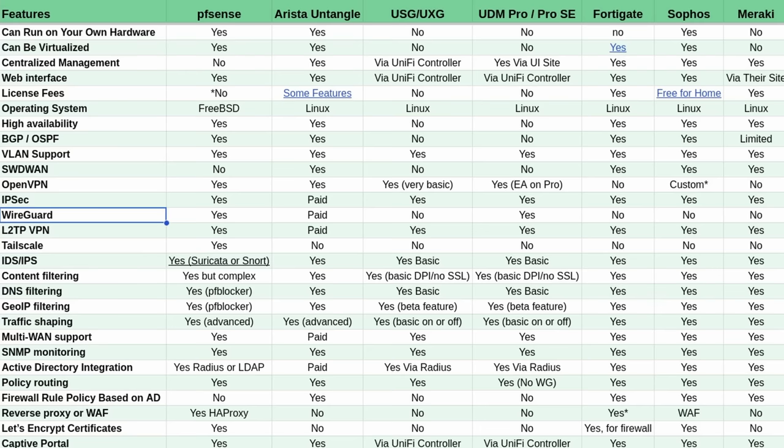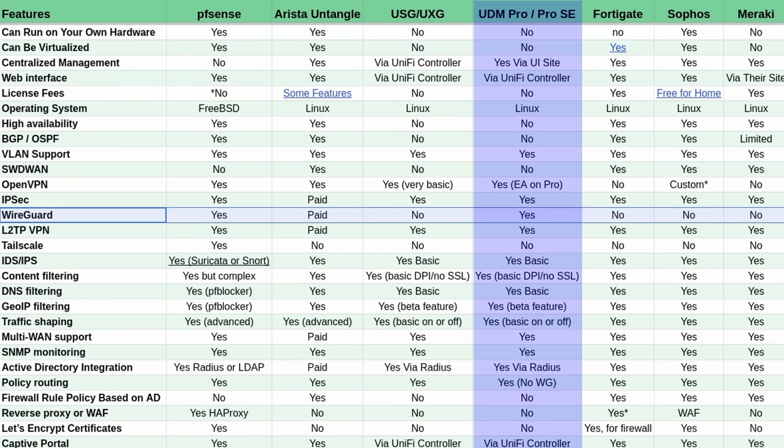I have a video linked below about a firewall comparison where I talked about things the Unified Dream Machine couldn't do, which created comments saying 'but it can if it's the Pro SE.' That's exactly why there are two different categories. I like being able to go back and see that companies have progressed and added features. I don't know why they didn't do this from the get-go though.